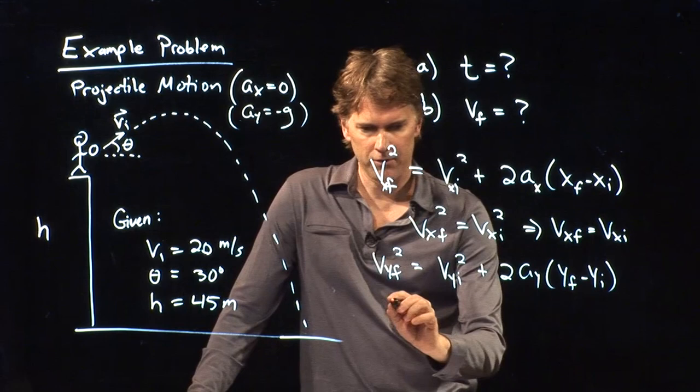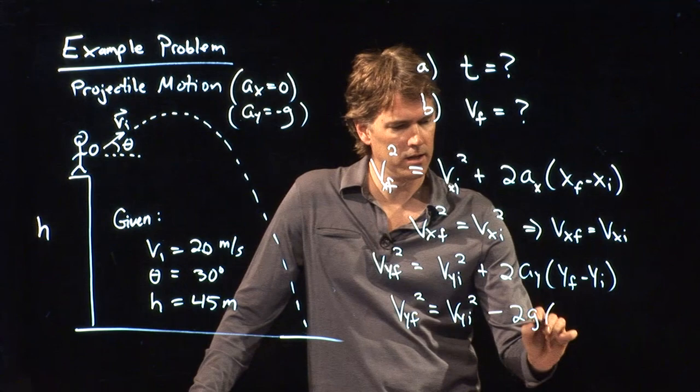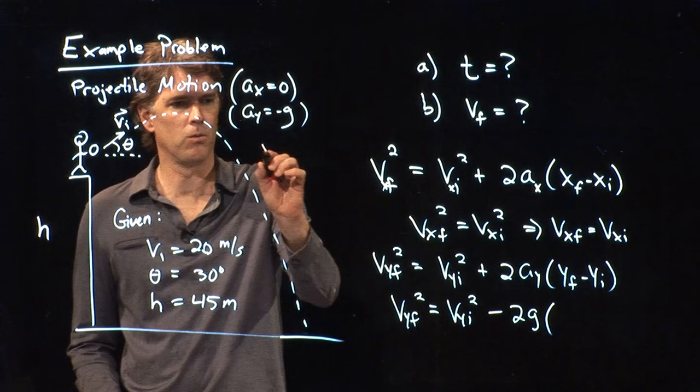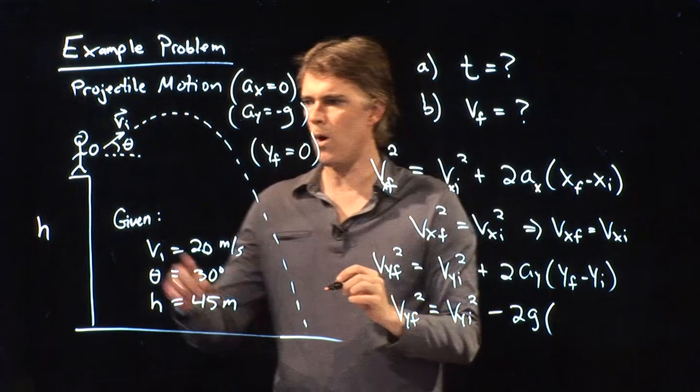Vy final squared equals vy initial squared minus 2g times what? Well, what is y final equal to? Zero. It's on the ground. Y final is zero.